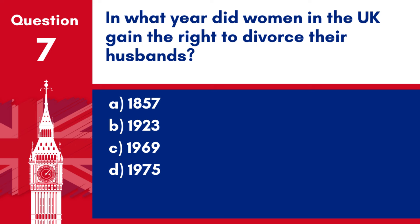Question 7. In what year did women in the UK gain the right to divorce their husbands? a. 1857. b. 1923. c. 1969. d. 1975. Answer: a. Women in the UK gained the right to divorce their husbands starting in 1857 with the enactment of the Matrimonial Causes Act.